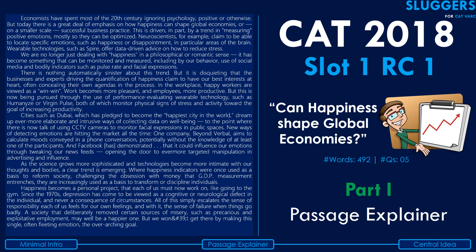Welcome to the channel Sluggers Blue for your CAT PRC preparation. In this particular video, we'll be taking up an RC that was asked in the first lot of the CAT 2018 exam. I've titled this RC as 'Can Happiness Shape Global Economies' — 492 words, five questions, quite standard for a CAT RC. Before we go into the passage explanation, I'd like to give a very brief introduction about the series of videos you're watching right now.